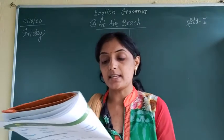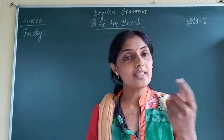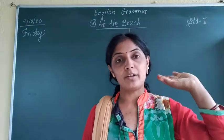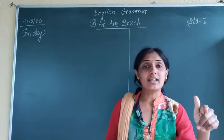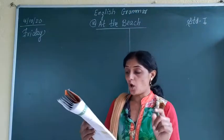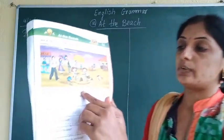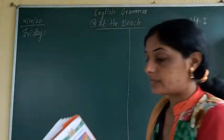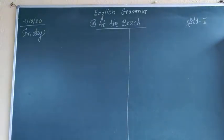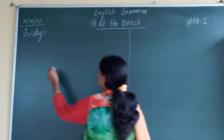Now some questions are asked. First question: what time of the day is it? I told you the difference between sunrise and sunset. What was the time when they went? It was evening. They went with their parents in the evening, so the answer is: it is evening time.